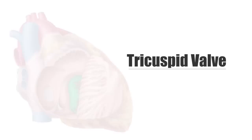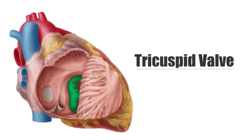The valves of the heart serve the cardiovascular system by controlling the direction of the blood flow during circulation, and determining the exact moment in which the blood passes between the chambers of the heart, as well as in and out of it entirely.